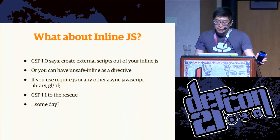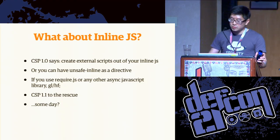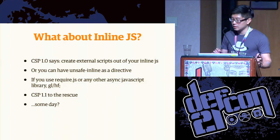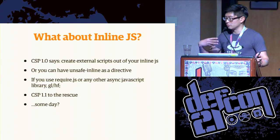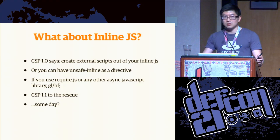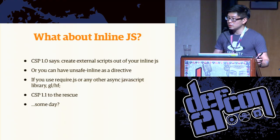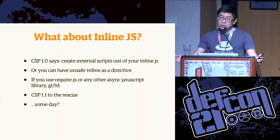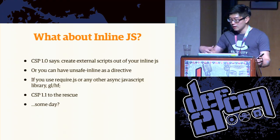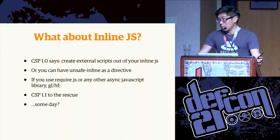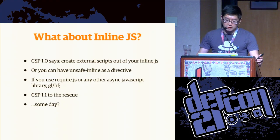Let's talk in more detail about the inline JavaScript issue I alluded to earlier. Content security policy 1.0 disallows by default the use of inline JavaScript on a page — this is actually kind of a big deal. The recommended approach is to create external scripts out of all your inline JavaScript. The biggest implication is that you're turning all these inline bits of JavaScript into synchronous calls the browser has to retrieve. Alternatively, you can specify the unsafe-inline directive, but this weakens the strength of your content security policy. And if you use asynchronous JavaScript loading libraries such as RequireJS, this also has implications.